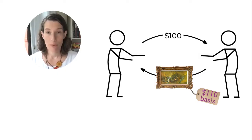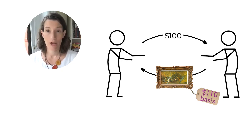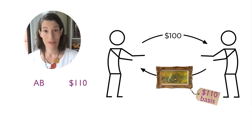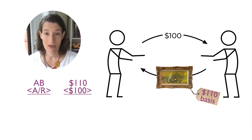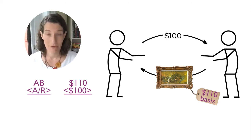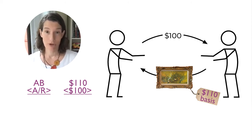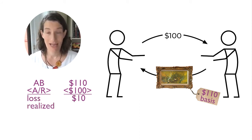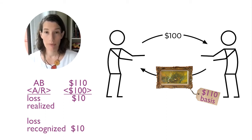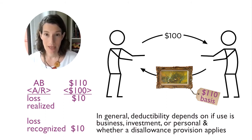Let's illustrate the calculation of loss with an example. Suppose a taxpayer has a painting and her adjusted basis is $110. We would compare that to the amount she's selling it for, which was $100. Because the adjusted basis is greater than the amount realized of $100, we would have a loss realized, which would be $10. That $10 loss would be recognized, and whether that $10 loss would be deductible would depend on other provisions.